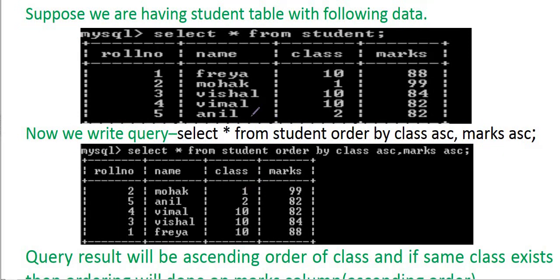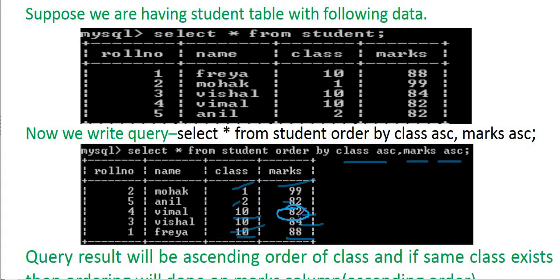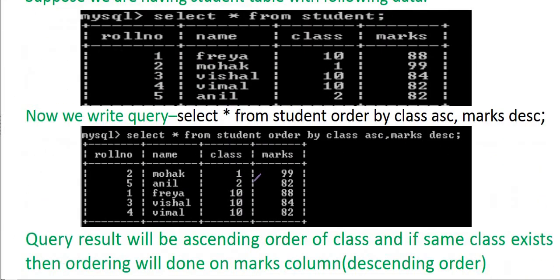Next: SELECT * FROM student ORDER BY class ASC, marks ASC — both class and marks in ascending order. So the result shows class 1 first (marks 99), then class 2 (marks 82), then class 10 with marks 82, 84, 88, 84 in ascending order.